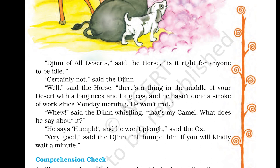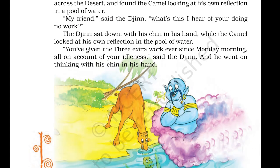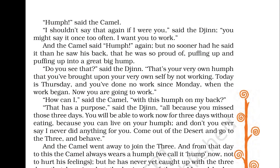The Jinn rolled himself up in his dust cloak and took a walk across the desert and found the camel looking at his own reflection in a pool of water. 'My friend,' said the Jinn, 'what's this I hear of your doing no work?' The Jinn sat down with his chin in his hand. 'You have given the three extra work since Monday morning, all on account of your idleness,' said the Jinn. 'Hump,' said the camel. 'I shouldn't say that again if I were you,' said the Jinn. 'You might say it once too often. I want you to work.' And the camel said 'Hump' again.